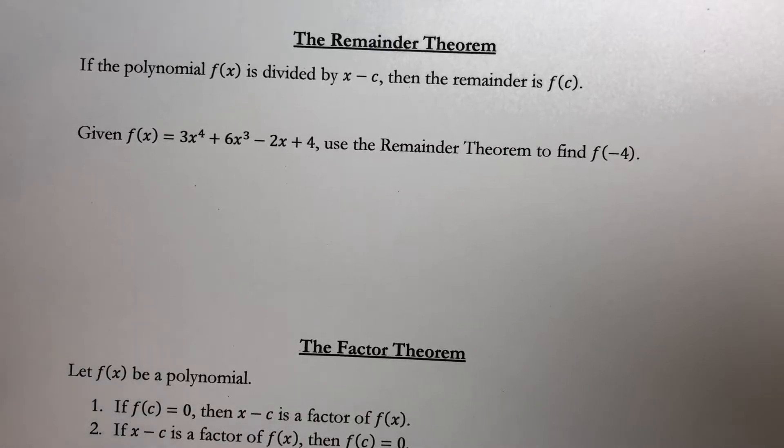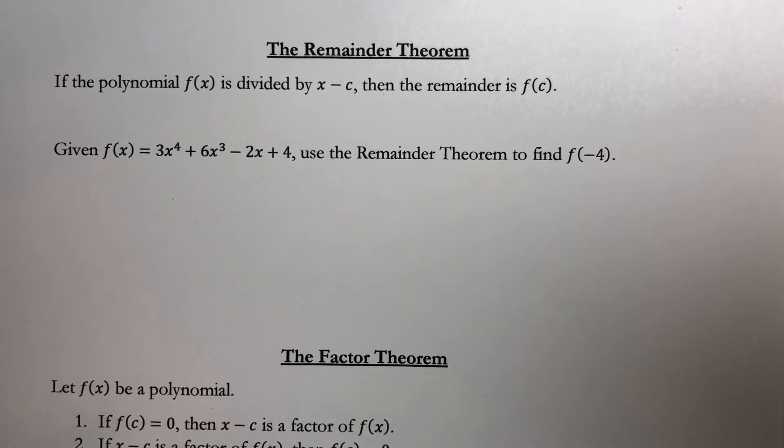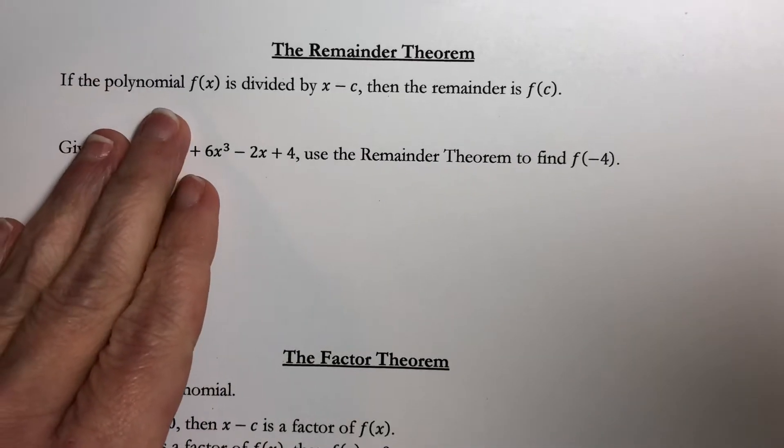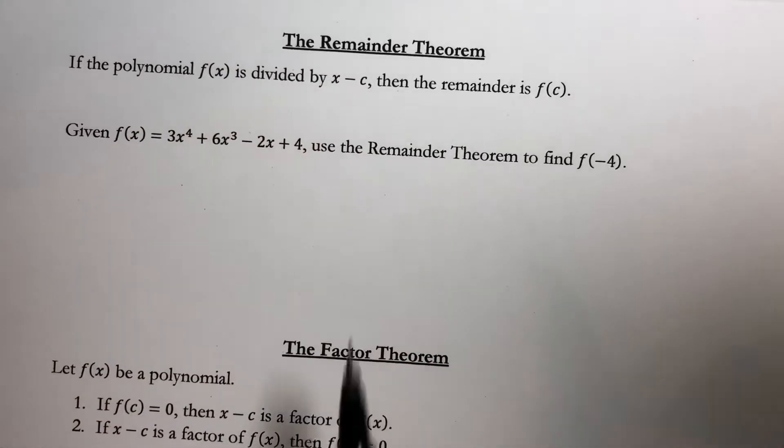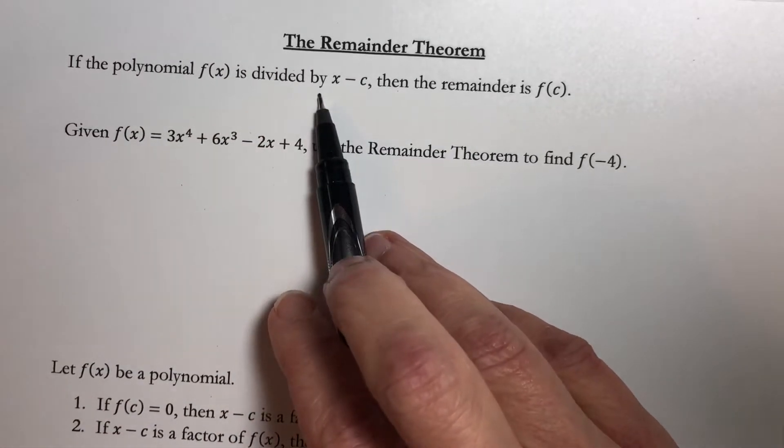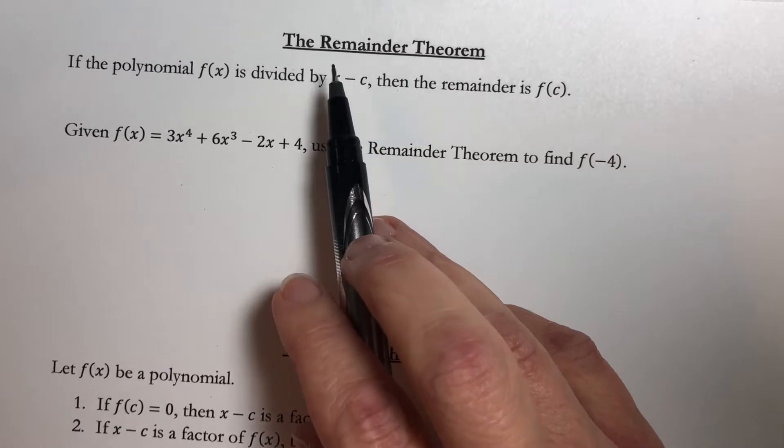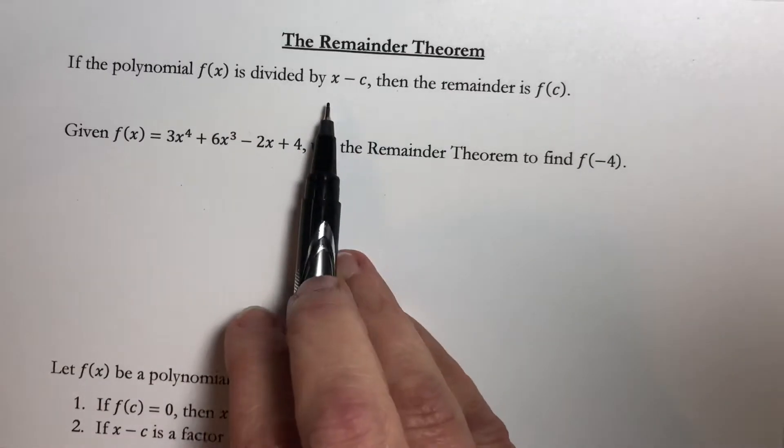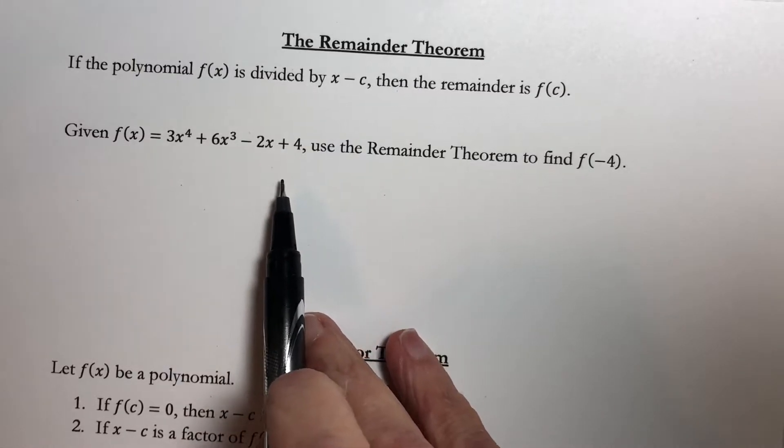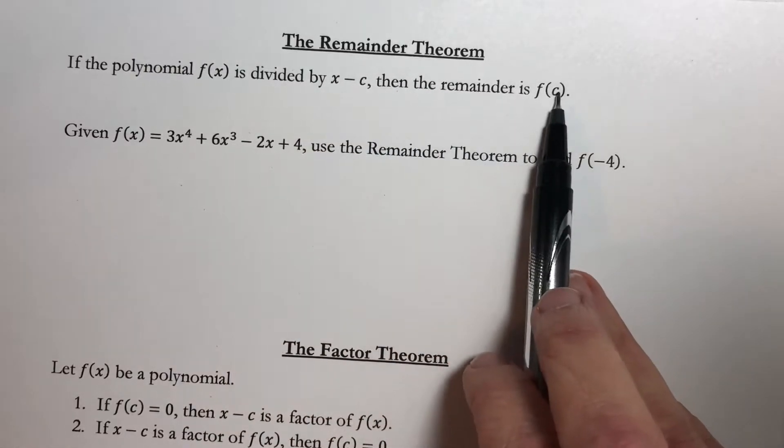This is part 4 of section 3.3. We've been doing long division and synthetic division. Now I'm going to talk about the Remainder Theorem and then the Factor Theorem. If the polynomial f(x) is divided by x minus c, notice that this is in the form that we would be allowed to use synthetic division on because it has a degree of 1 and our coefficient of x is 1. Then the remainder is f(c).